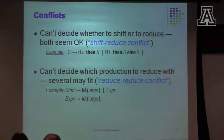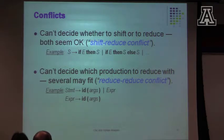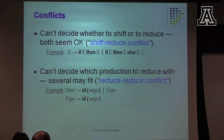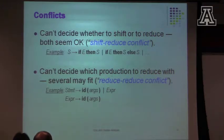It turns out that sometimes we don't know whether we should shift or we should reduce. Sometimes it looks like maybe I should shift, maybe I should reduce — I don't know which one to do. Either of those would be okay. That's what a shift-reduce conflict is. There are also situations where you don't know which production to reduce with — maybe there's more than one production that applies. In that scenario, you have a reduce-reduce conflict.